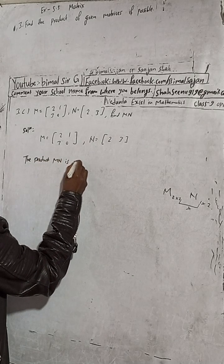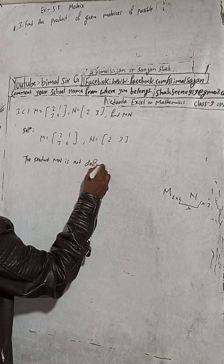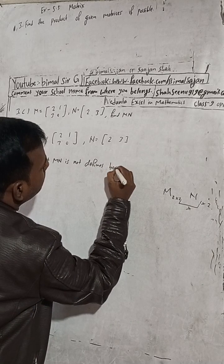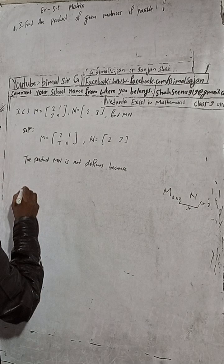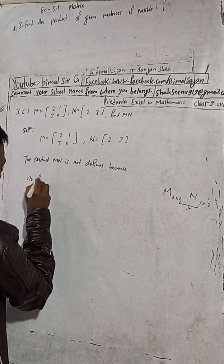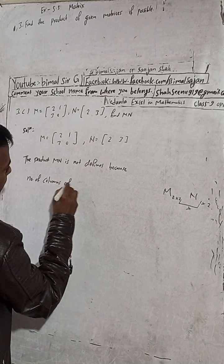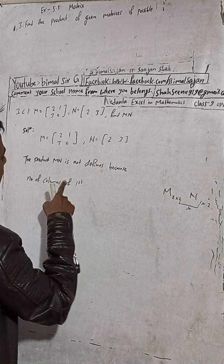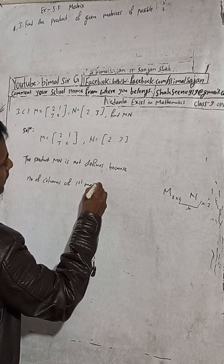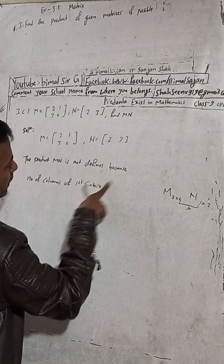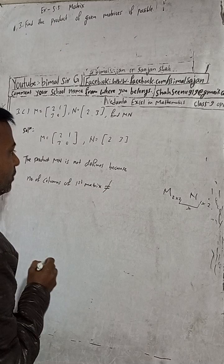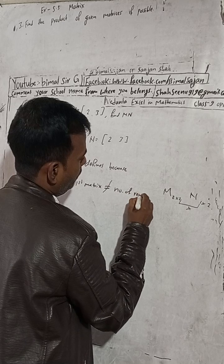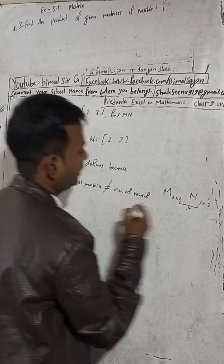MN is not defined because the number of columns of the first matrix is not equal to the number of rows of the second matrix.